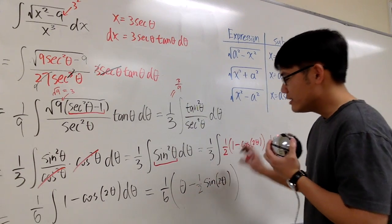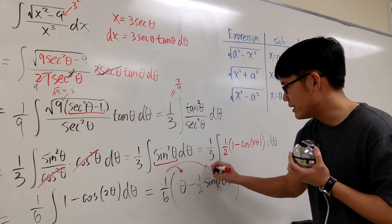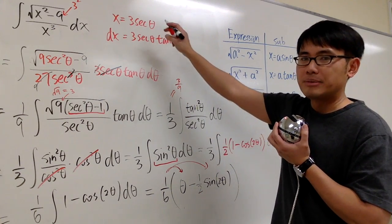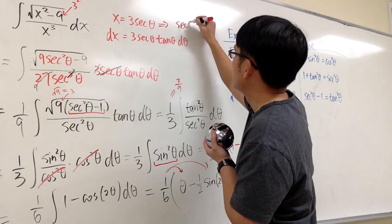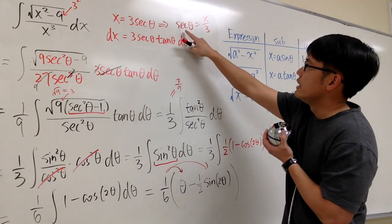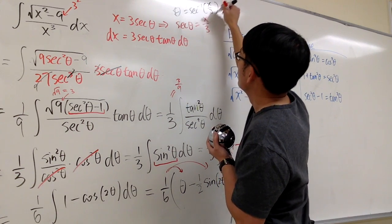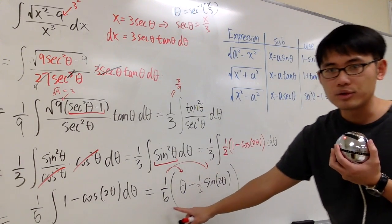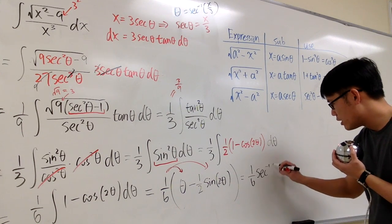This expression is still in the theta world, so we have to go back to the x world. Going back to the substitution, if we divide both sides by 3, we get secant theta equals x over 3. Applying the inverse secant on both sides, theta equals the inverse secant of x over 3. So one over six times inverse secant of x over 3.